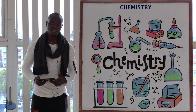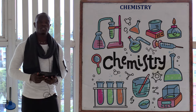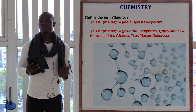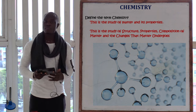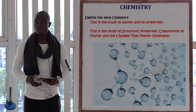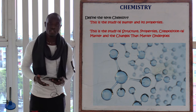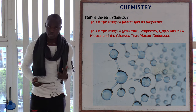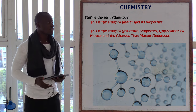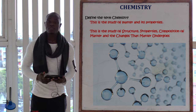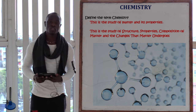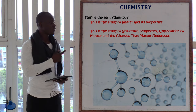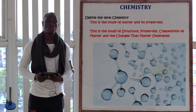Hello there and welcome again to this class. We want to look at chemistry from one paper and begin with the first question: define the term chemistry. You can give two definitions. A short definition is that chemistry is the study of matter and its properties. A fuller definition is that chemistry is the study of the structure, properties, and composition of matter and the changes that matter undergoes.